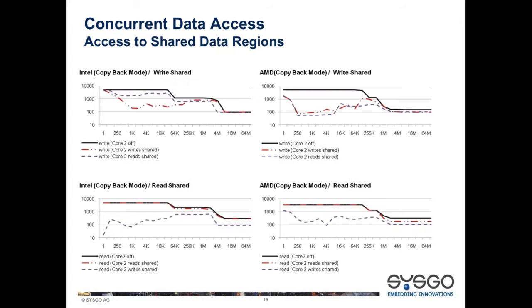When we go to a scenario with shared data regions between cores, the behavior changes dramatically. The black line again shows performance when the second core is off, but as soon as the second core comes online and reads or writes data, we have very non-deterministic behavior. We can't really say what the performance will be because it's highly dependent on the actions of the second core in the system.